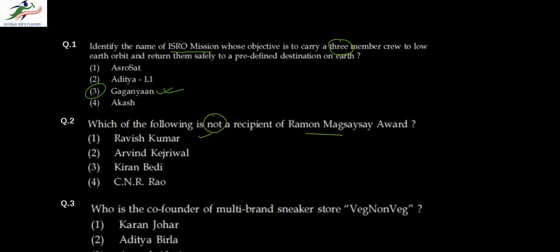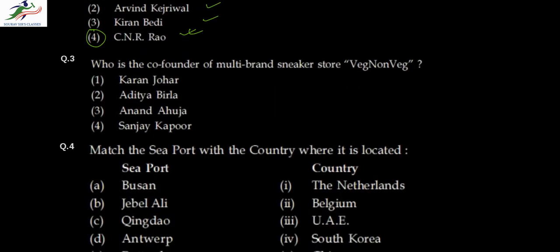We know Ravish Kumar got the Magsaysay Award this year, Kejriwal got it in 2016, and Kiran Bedi got it in 1994. So the only option is CNR Rao — he never got the Magsaysay Award; he got the Bhatnagar Award. He's a scientist and chemical engineer. Question three asks who is the co-founder of the multi-brand sneaker store Veg Non-Veg, which was very much in the news — that is Anand Ahuja.